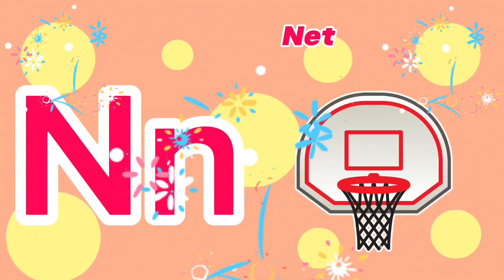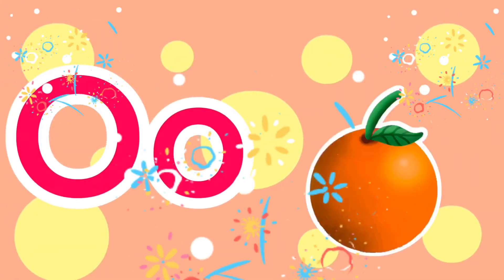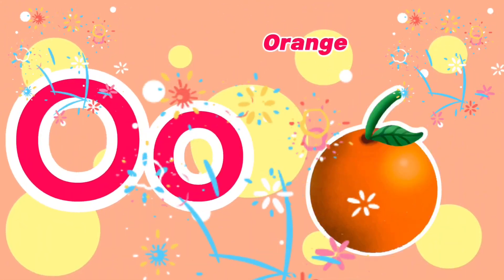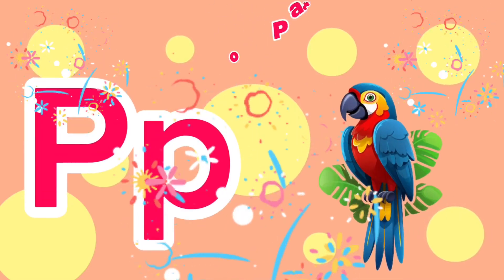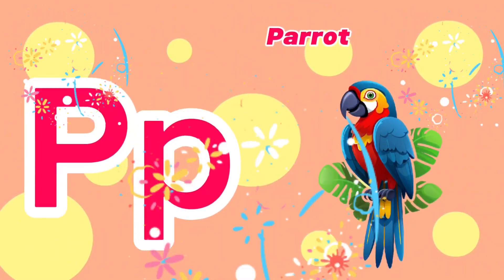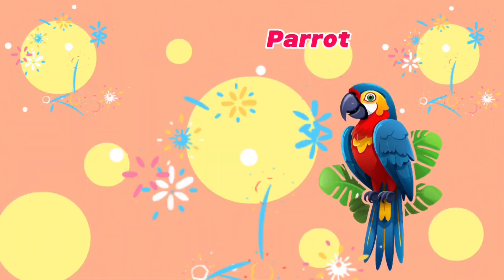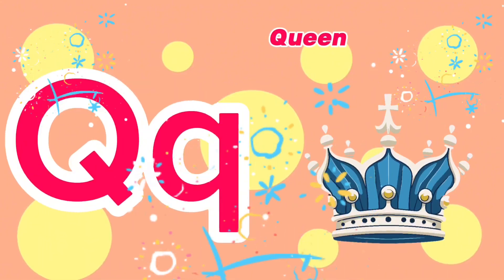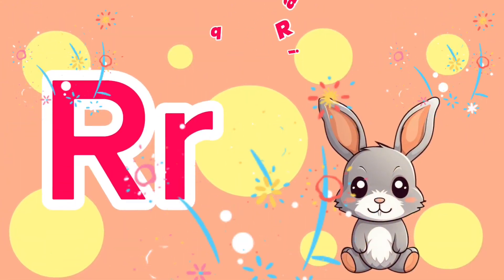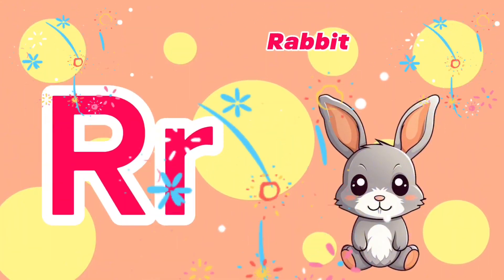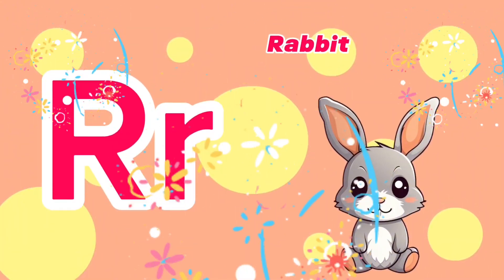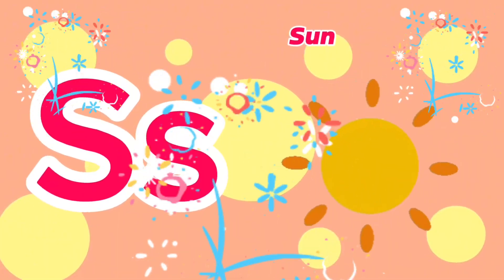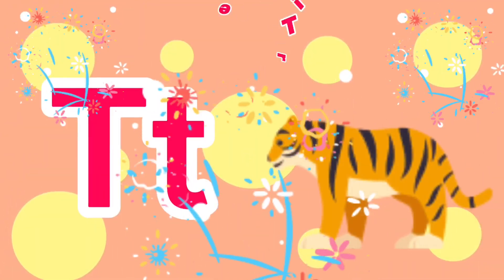O is for orange. P is for parrot. Q is for queen. R is for rabbit. S is for sun. T is for tiger.